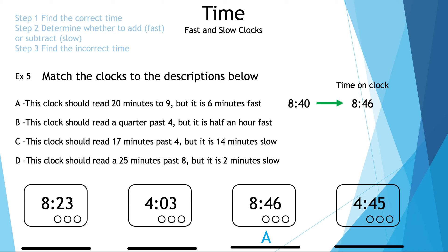Now let's take a look at B. This clock should read a quarter past four, but it is half an hour fast. A quarter past four is 4:15. We add half an hour to make it 4:45, and that is the fourth clock in the row. We put B below 4:45.